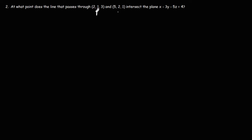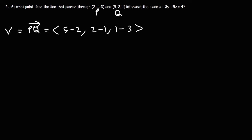Let's call the two given points P and Q. In order to define a line, we need a point and a vector. So let's find vector PQ by subtracting: Q minus P. So it's going to be 5 minus 2, comma 2 minus 1, comma 1 minus 3. We're subtracting the x values, the y values, and the z values. So 5 minus 2 is 3, 2 minus 1 is 1, and 1 minus 3 is negative 2. So that is the direction of the line, defined by vector V. Now that we have the vector, how can we write the parametric equations for this line?